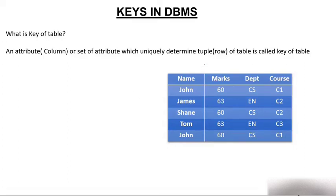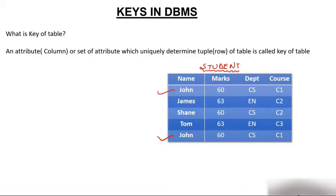Suppose the table name is Student and I want you to find exact information of John. There are two Johns, so you get confused. Suppose both Johns have the same marks, are from the CS department, and their course is C1 — exactly the same information. In that case, you will not be able to determine which John I am talking about. Right now the table doesn't have any column which uniquely identifies a row.